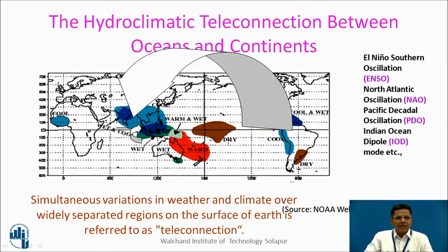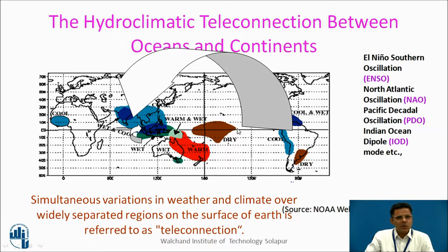There is a tele-connection between the oceans and continents. Tele-connection means the simultaneous variation in weather and climate over widely separated regions on the surface of the earth. Whatever sea surface temperature changes take place over the Pacific Ocean, they have influence over Indian summer monsoon rainfall. El Niño–Southern Oscillation, North Atlantic Oscillation, Pacific Decadal Oscillation, and Indian Ocean Dipole Mode are such hydro-climatic tele-connections observed over the earth.